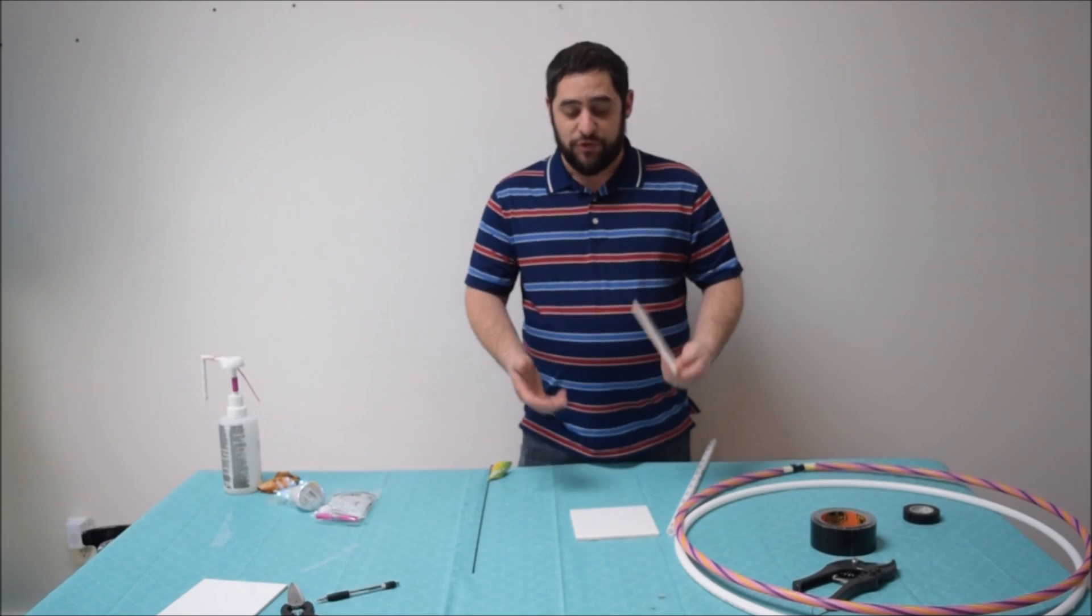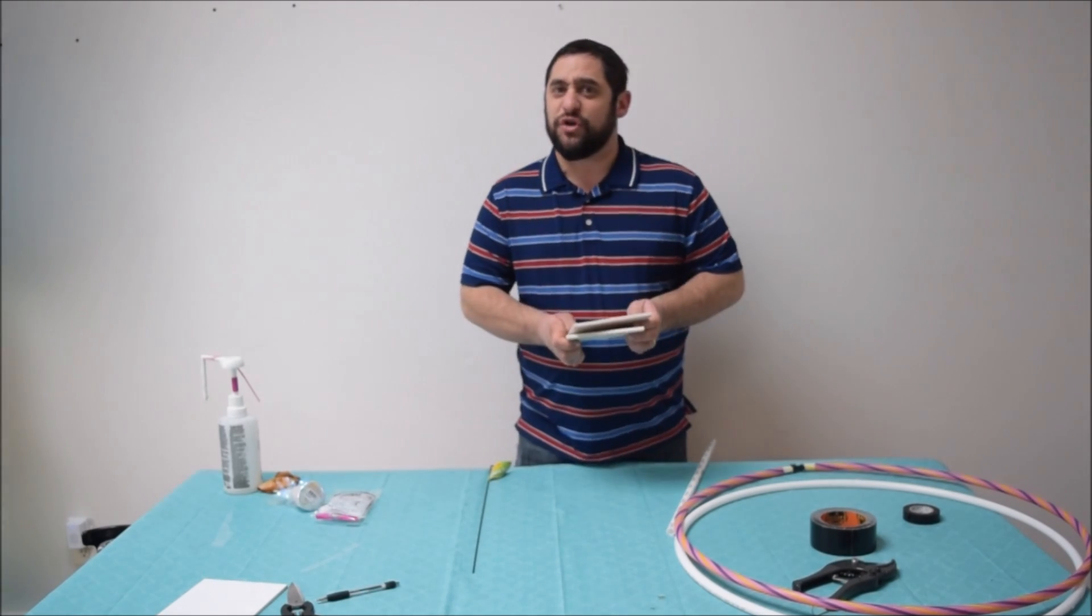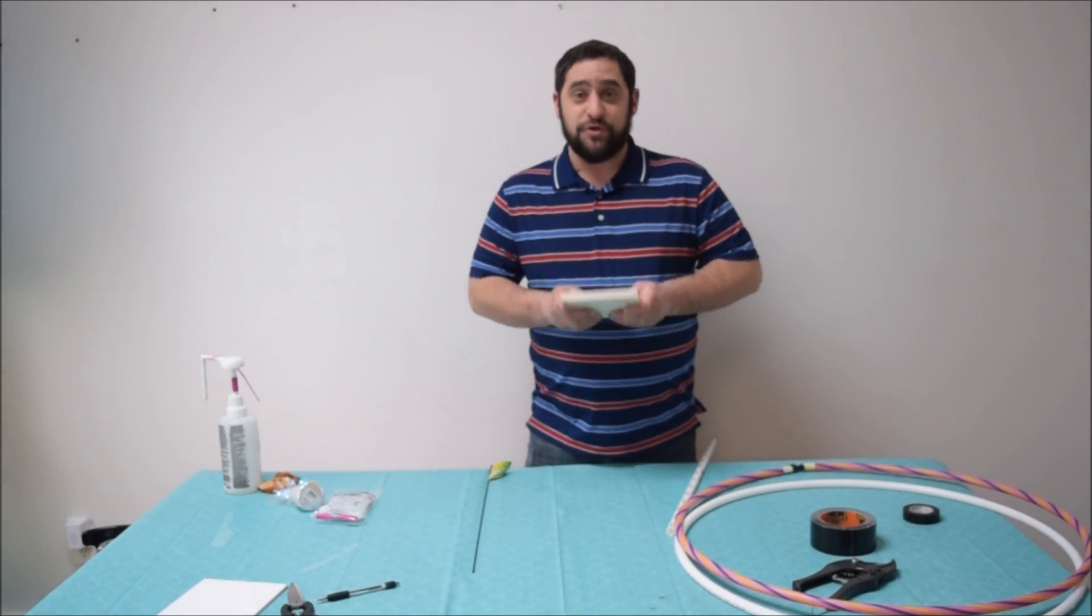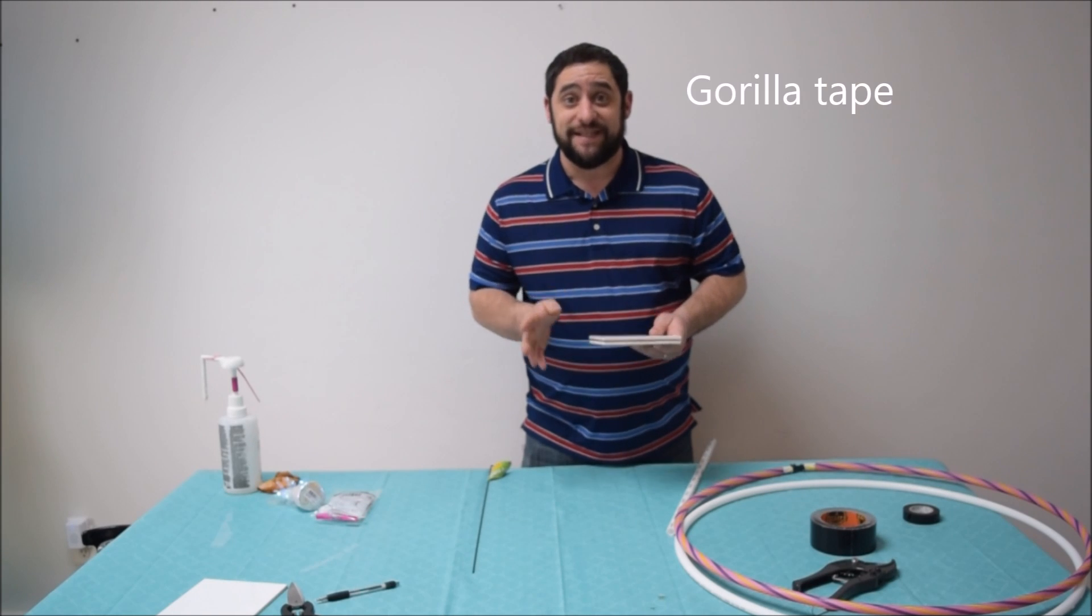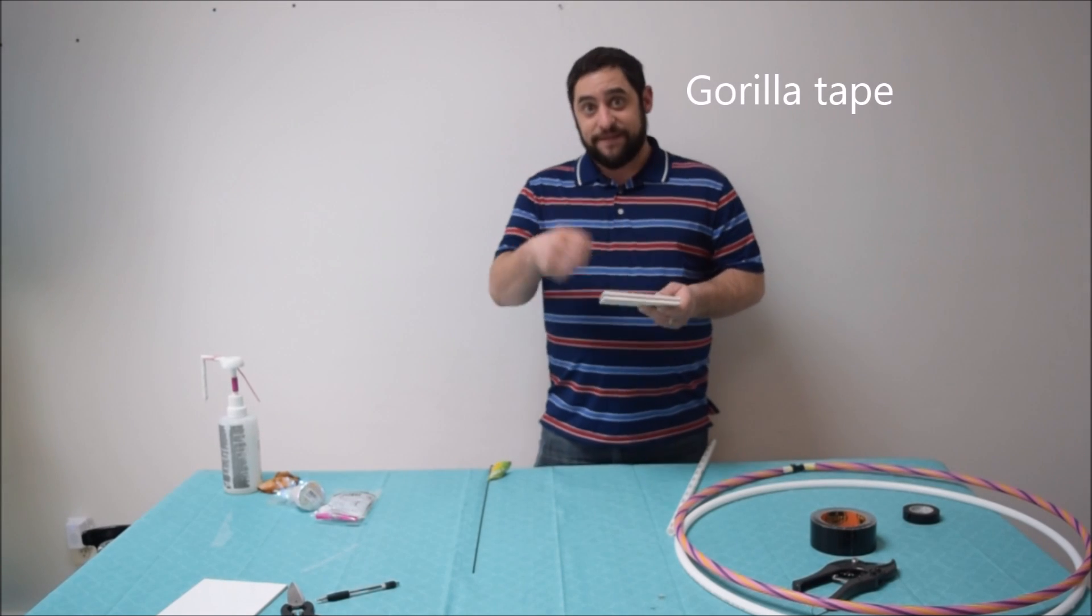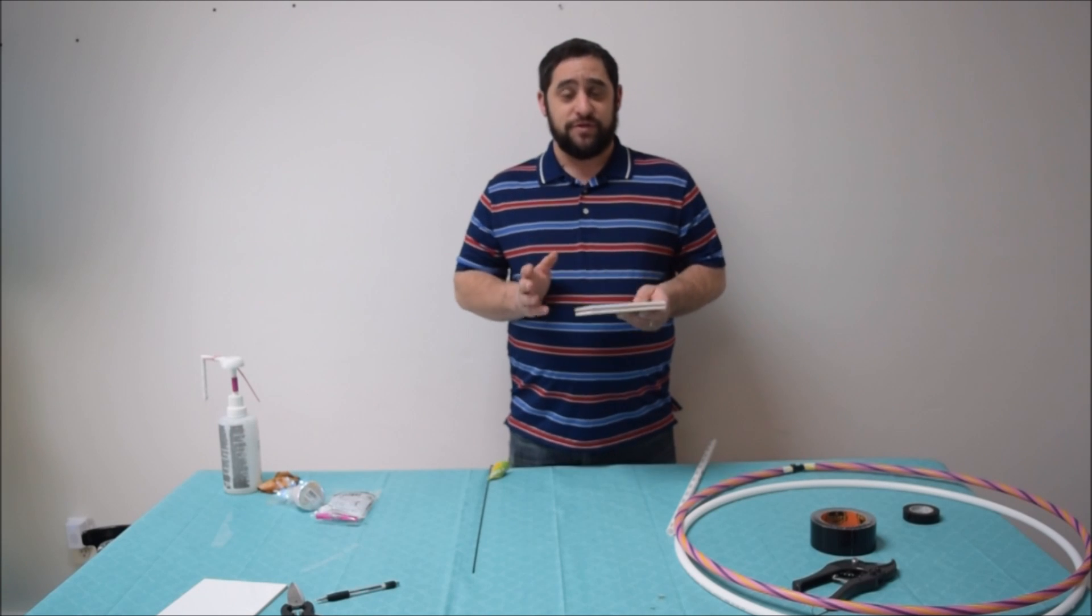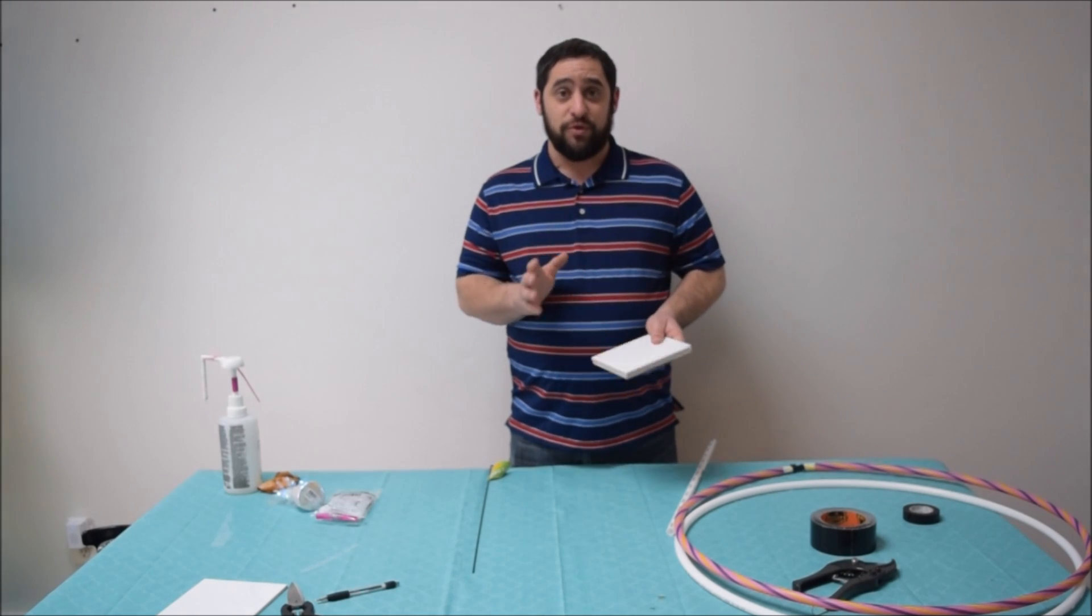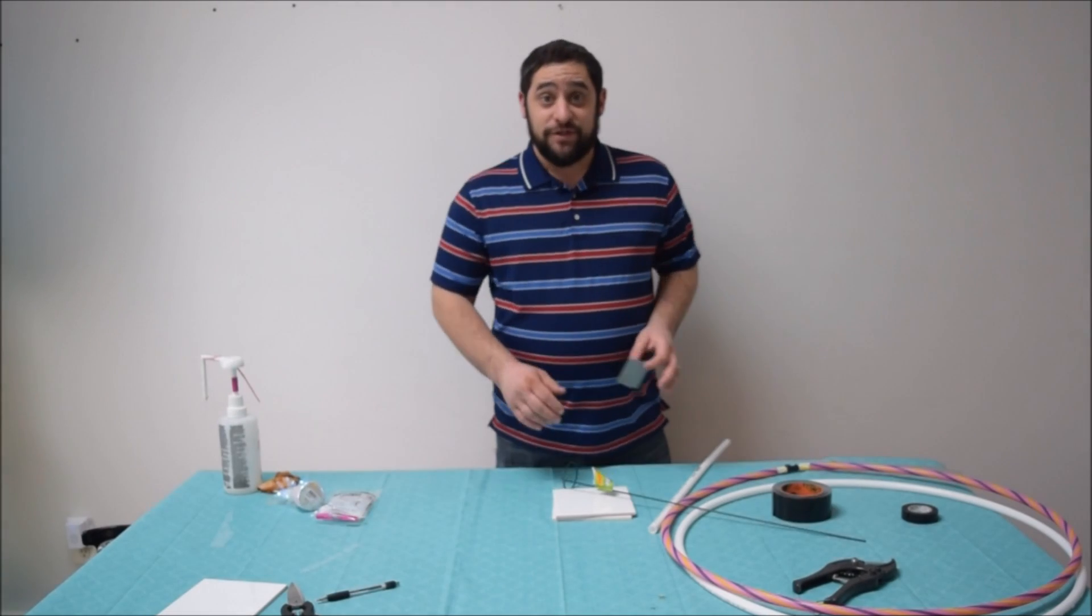Once you find your center of your tile, I'm using two tiles to make it a little bit sturdier. Basically, we're just gonna tape them together with Gorilla Tape. You could use hot glue and tape, but make sure that you always use tape. The glue alone is not gonna hold.